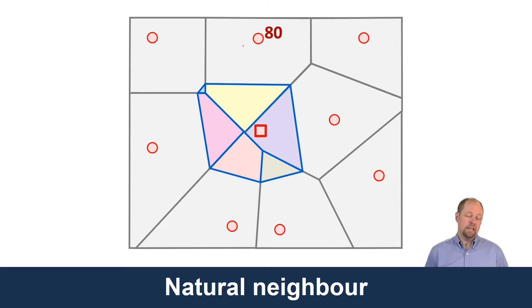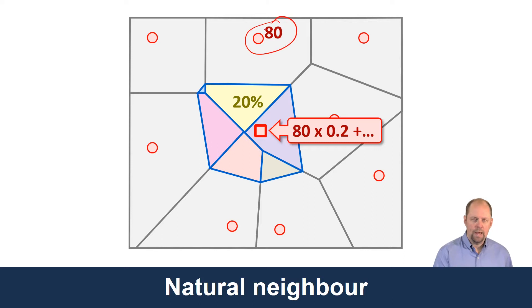If we have a sample value of 80—let's say it's a zinc concentration or elevation—and this polygon represents 20% of the total area, we're going to multiply the sample value 80 by 20%, or 0.2.